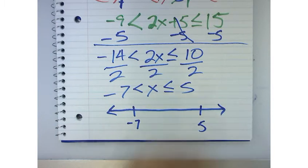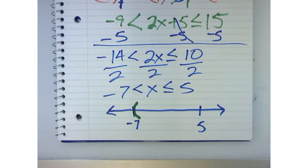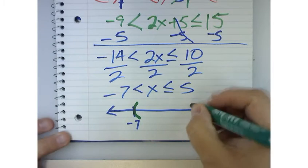All right. And then on the 5, are we including the number 5 in the solution set? Yes. So what do I do there? Bracket. A bracket. So the bracket means we include it.